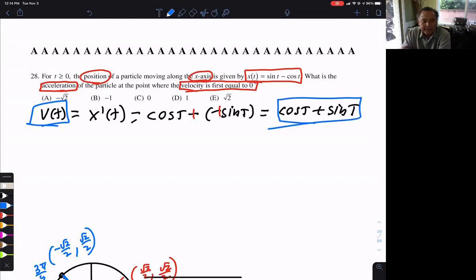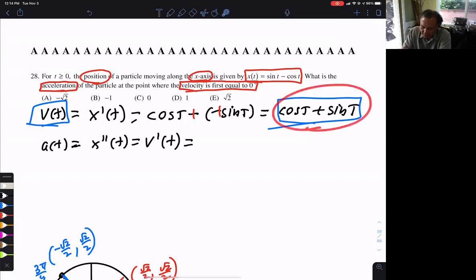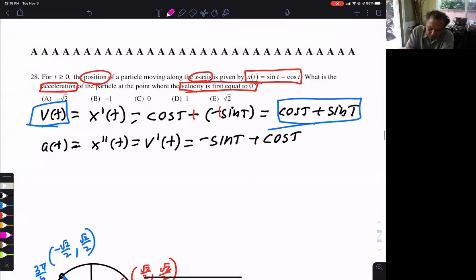Let's find acceleration. Acceleration, you should know, is the second derivative of the position, which is the derivative of the velocity. We can do this. Well, here's the velocity. Take the derivative to get acceleration. What's the derivative of cosine t? That's minus sine t. And what's the derivative of sine t? That's cosine t. So now we have found acceleration.